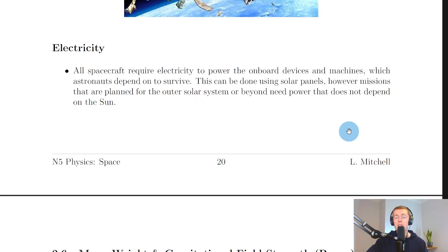Our last challenge here is electricity. All spacecraft require electricity to power the onboard devices and machines which astronauts depend on to survive. This can be done using solar panels. However, missions that are planned for the outer solar system or beyond need power that does not depend on the sun. So if the spacecraft is in line of sight of the sun, then you can use solar panels in your spacecraft to generate electricity.